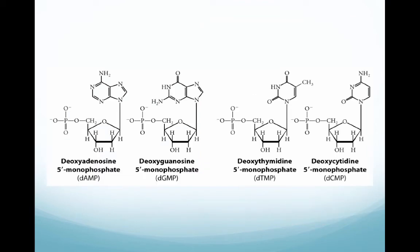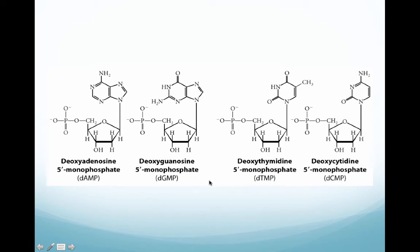So to review: the first component is the sugar, the second component is the nitrogenous base, and the third component is the phosphate group. The four different nucleotide structures that occur in DNA are deoxyadenosine, deoxyguanosine, deoxythymidine, and deoxycytidine, and their chemical names all end with 5' monophosphate.